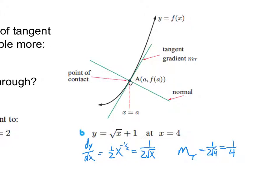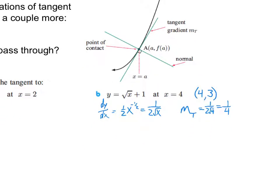The slope is one-fourth. For the point, plug x equals four into the function: square root of four is two, plus one is three, so the point is (4, 3). Using point-slope form: y minus three equals one-fourth times (x minus four). Solving for y gives y equals one-fourth x plus two. That is the equation of the tangent line to that radical function at the point (4, 3).